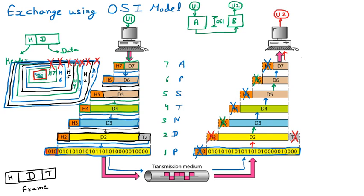In summary, we have seven layers, and each layer adds its header at the sender's side, so the data is transmitted with seven headers applied. On the receiver's side, all headers are removed one by one, and only the required data is delivered to the destination. That is the data exchange process using the OSI model.